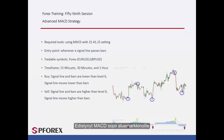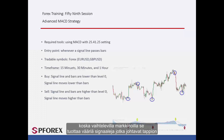Advanced MACD is appropriate for a range market, while it generates false signals on volatile markets that would result in capital loss. MACD property values should be 25, 41 and 21.